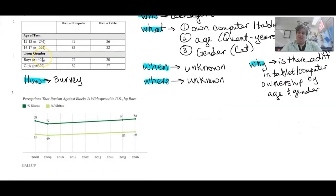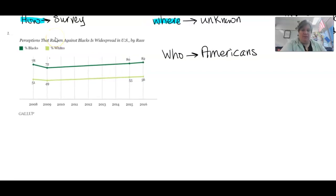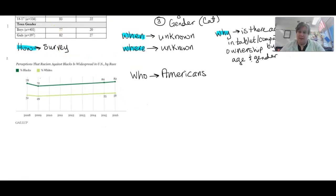All right. So, let's look at the next one. The next one is a graph. Still, same idea. So, let's see. It's this one. So, who? Okay. So, perceptions that racism against blacks is widespread. And they have percent in the U.S. They have percent blacks, percent whites. We don't know the age, but we do know that it's U.S. So, we're going to say Americans. And that's a good enough who. That's who they surveyed. It's probably American adults.